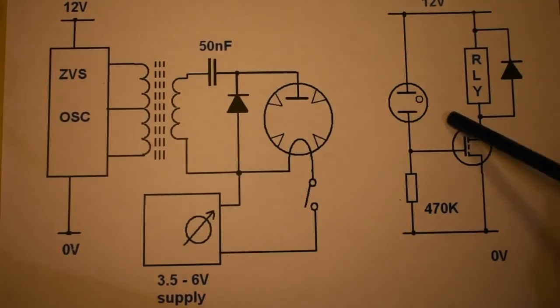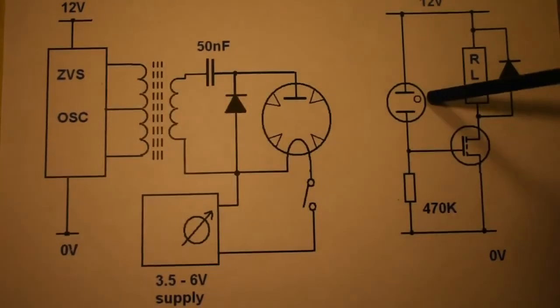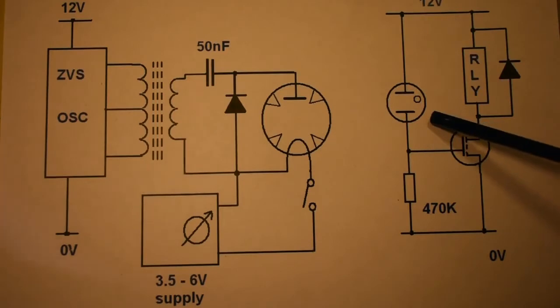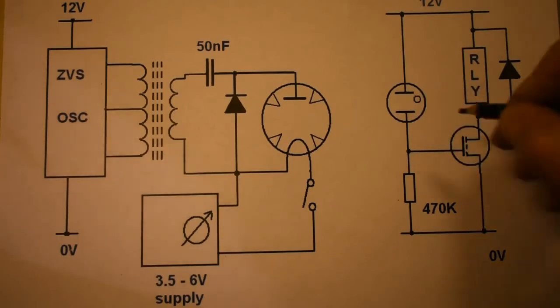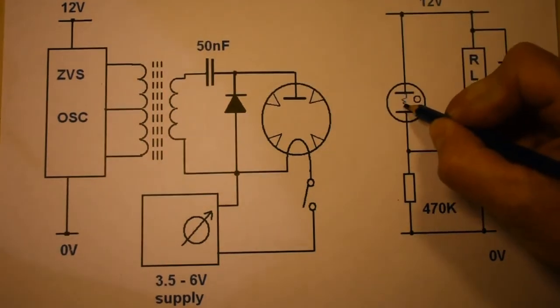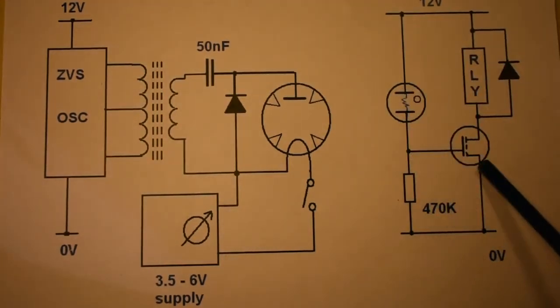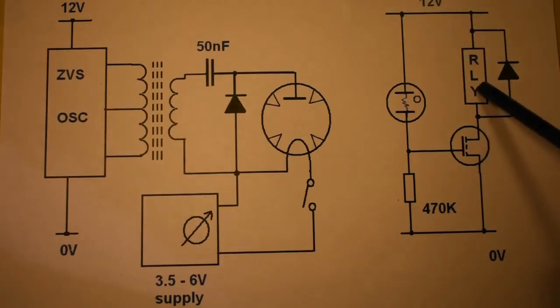This is the neon lamp we're flashing with the microwave energy coupling it, and when this produces a kind of glow with a plasma in it, this effectively becomes a resistor, and that operates this MOSFET operating relay.